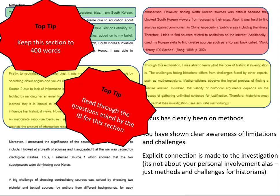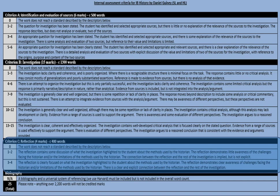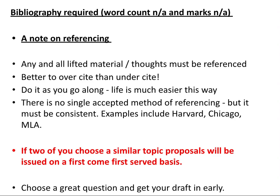Try and keep the reflection section to about 400 words. Read through the questions asked by the IB and keep coming back to the mark scheme. For top band, the reflection is clearly focused on what the investigation highlighted about the methods used by historians, demonstrates clear awareness of challenges and limitations, and there is a clear and explicit connection between the reflection and the rest of the investigation. Now, you don't actually get marked for the bibliography as such, but you are required to include one. Any and all lifted material or thoughts must be clearly referenced — it's much better to over-cite than under-cite, so do it as you go along. There is no single accepted method of referencing for the IA; the only requirement is that it must be consistent throughout. Examples include Harvard, Chicago, and MLA.